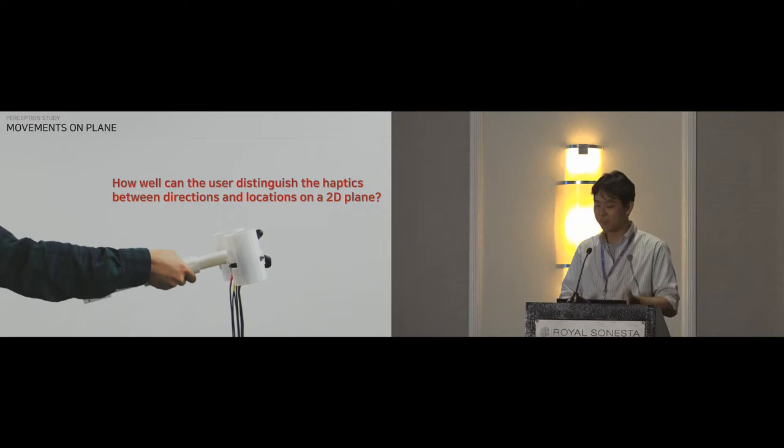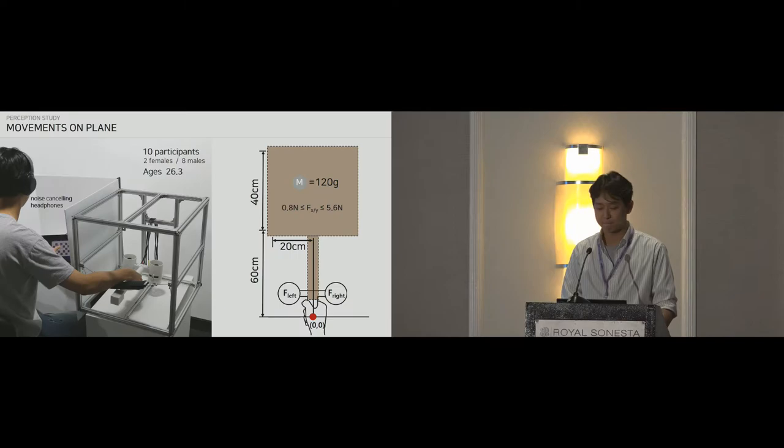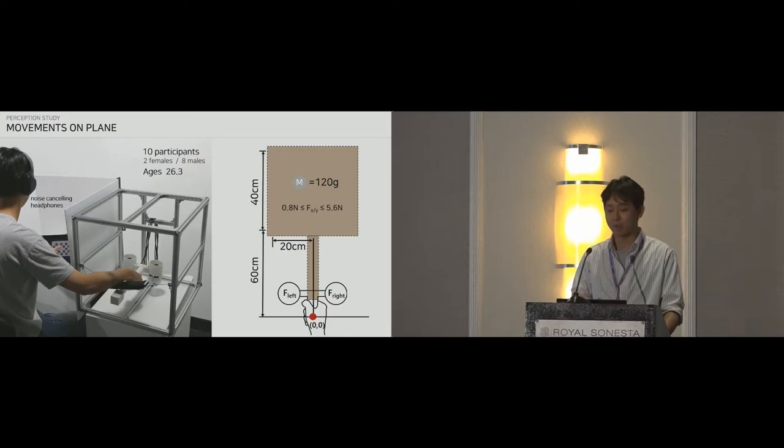So, we focused on understanding the user perception performance when recognizing continuous weight movement on a plane through haptic illusion. This means that we fixed the weight of the object. This is the setup of our perception study. We had 10 participants, and they wore noise-canceling headsets, and we played white noise to them. We asked the participants, please feel the virtual ball rolling on a large 2D plane, and respond. The virtual 2D plane is 40 cm by 40 cm, and the ball is 120 grams. It means that each propeller needs to generate 0.8 newton to 5.6 newton. They cannot see the device and can only feel the weight motion illusion.